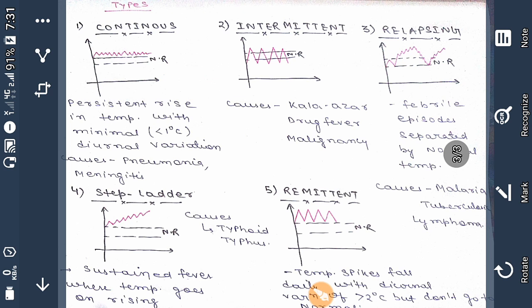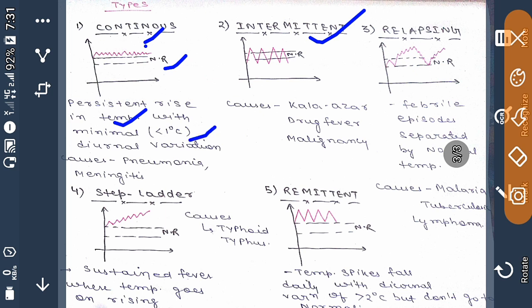Fever is basically divided into five to six types: continuous, intermittent, relapsing, step ladder, and remittent. Continuous fever is defined as persistent rise in temperature with minimal diurnal variation, and that variation must be less than one degree Centigrade. You are seeing here persistent rising temperature. This can be observed in pneumonia and meningitis.